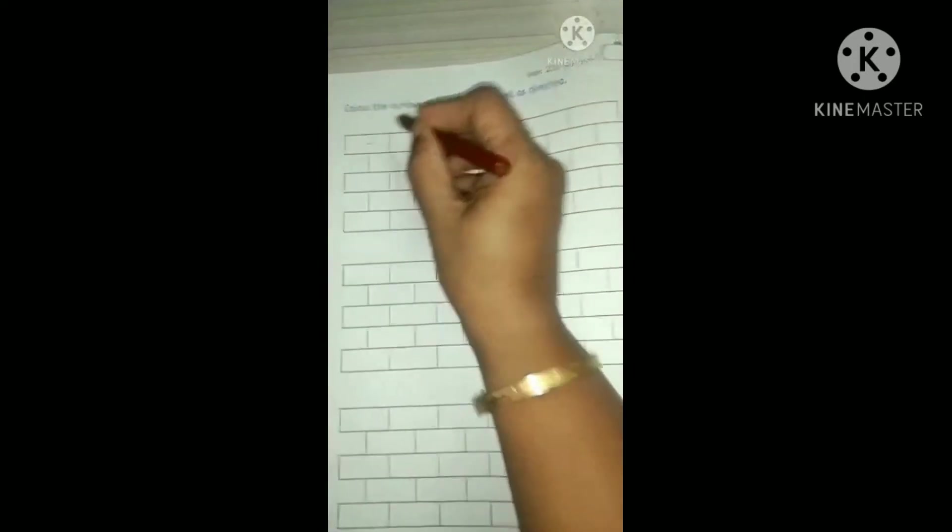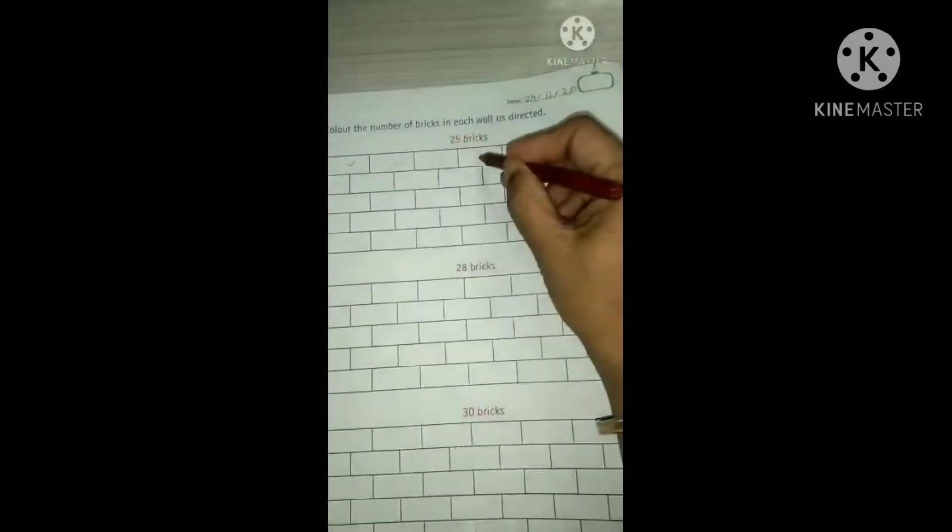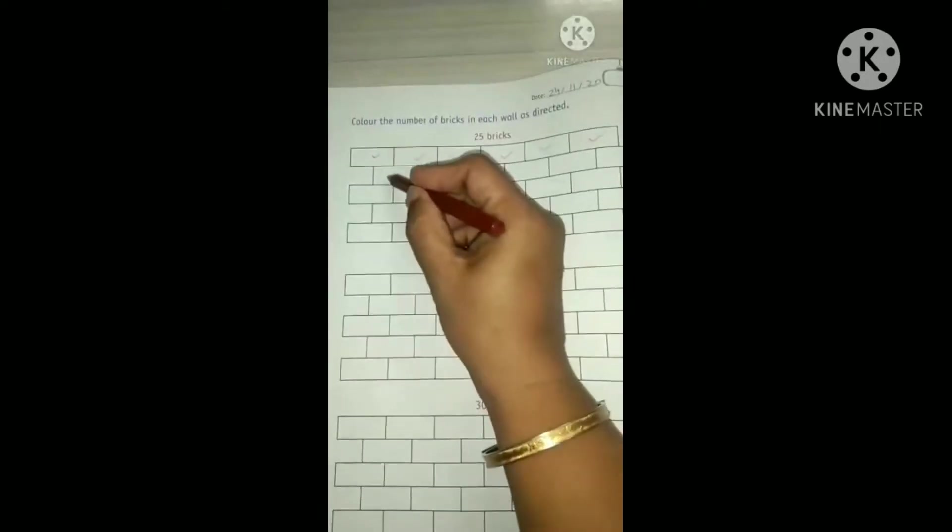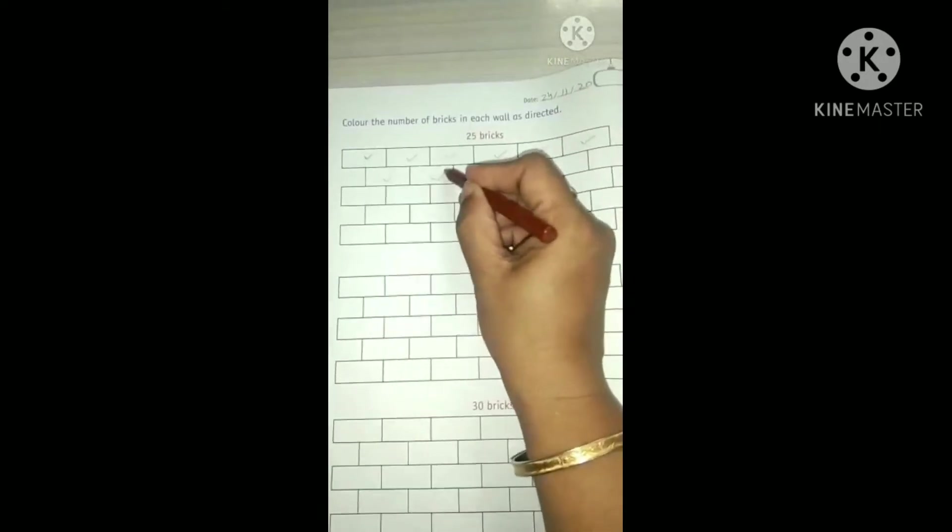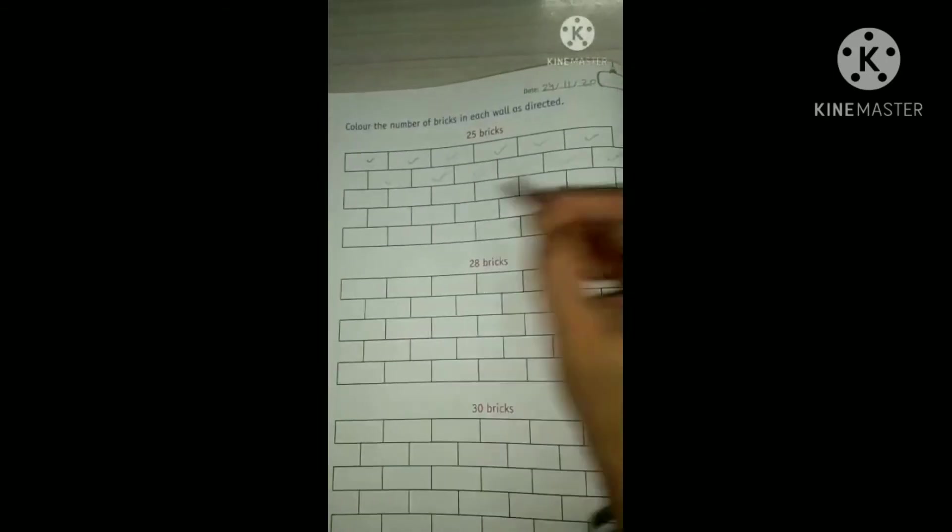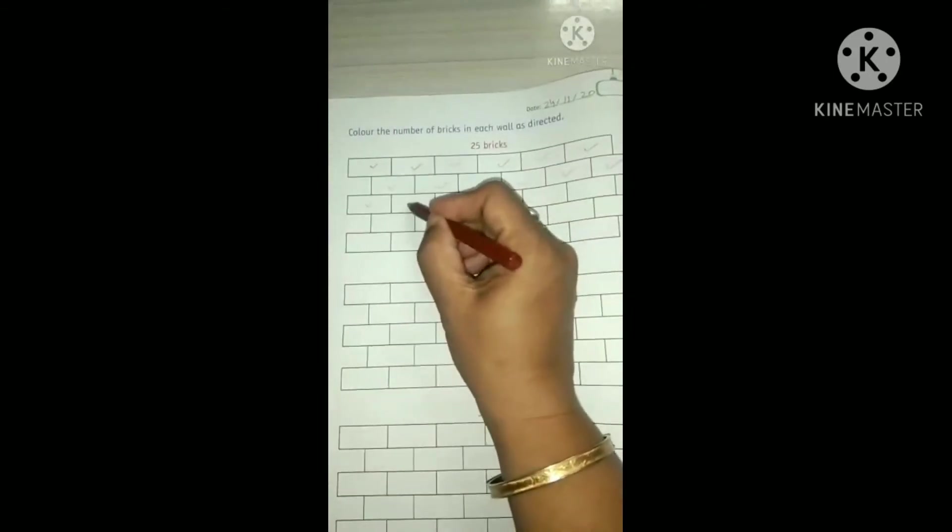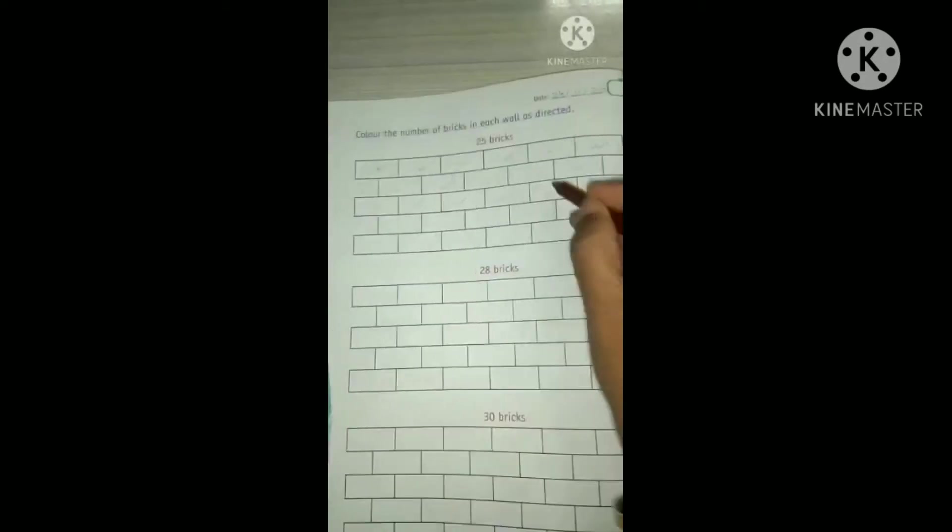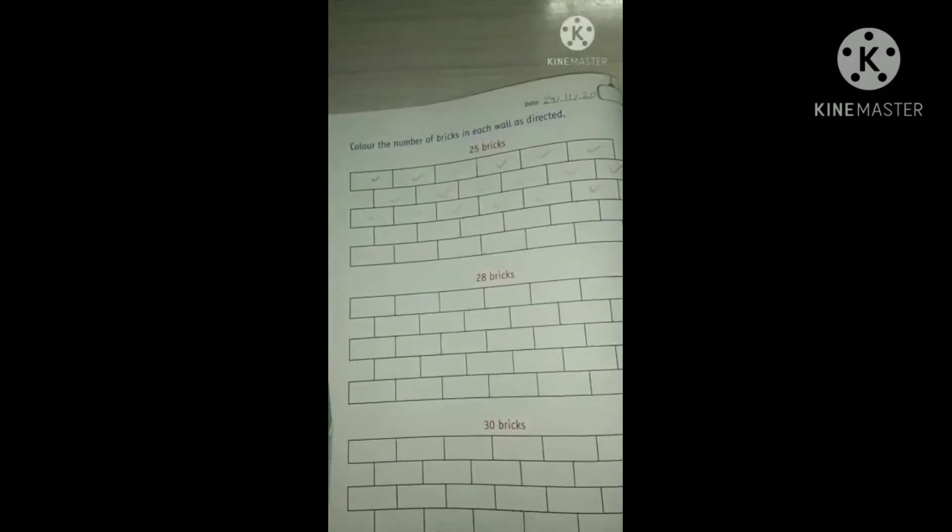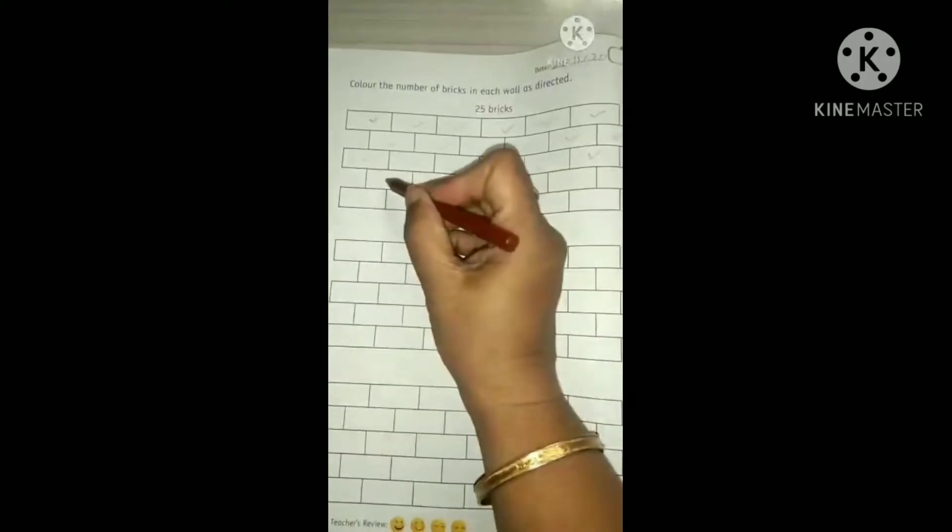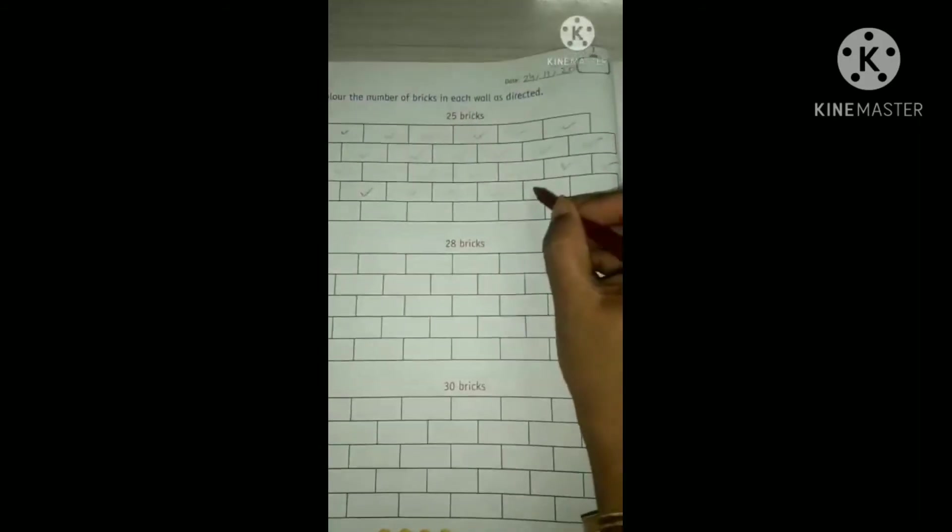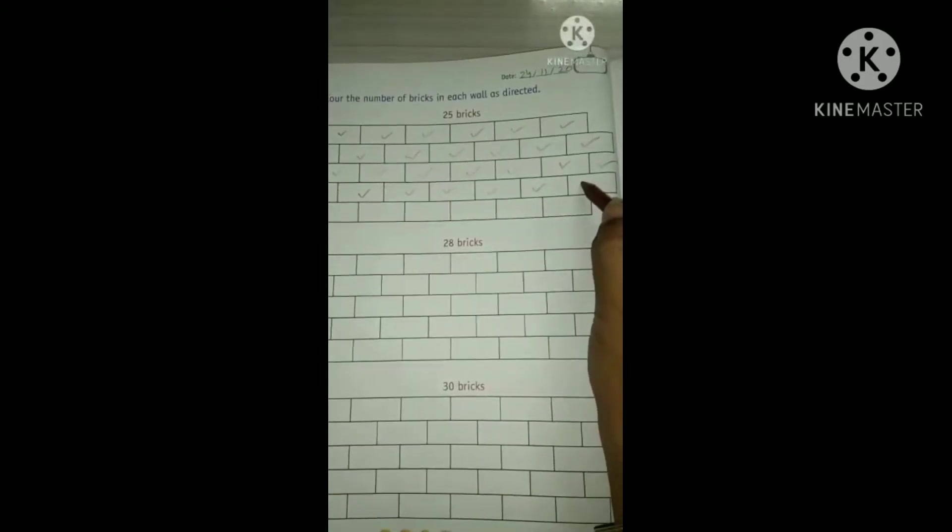See. 1, 2, 3, 4, 5, 6, 7, 8, 9, 10, 11, 12, 13, 14, 15, 16, 17, 18, 19, 20, 21, 22, 23, 24, 25.